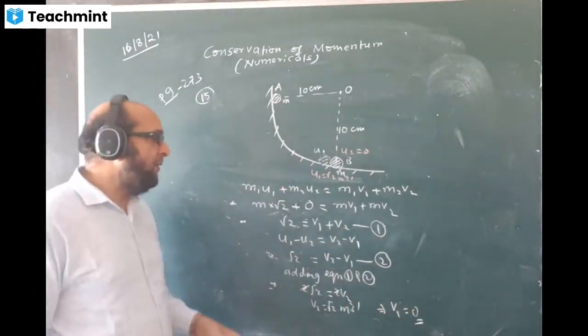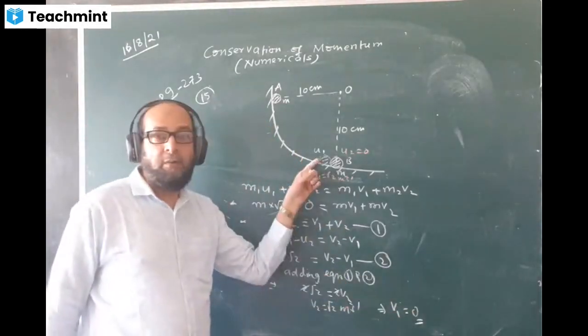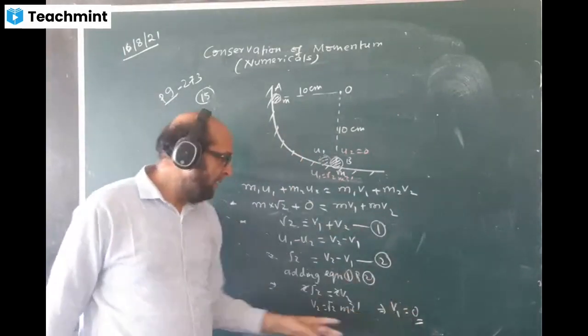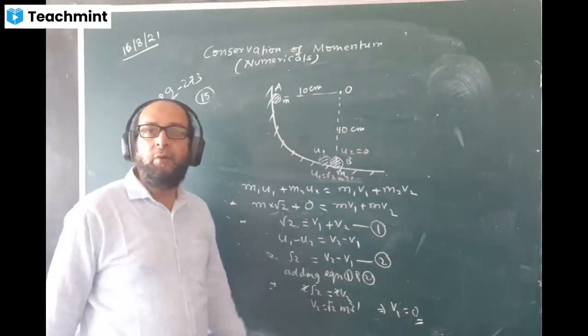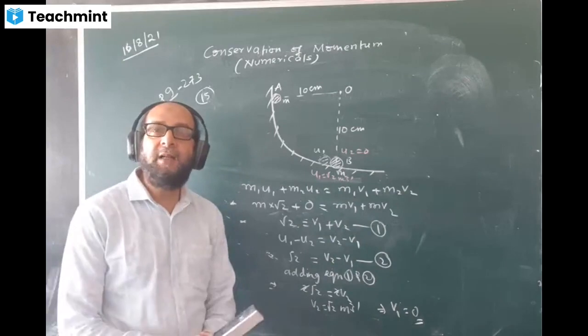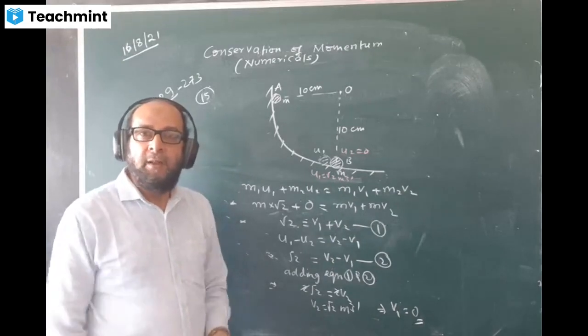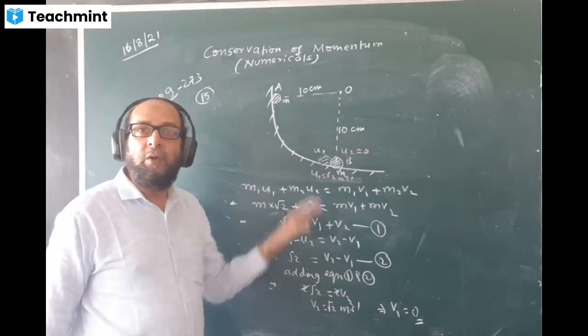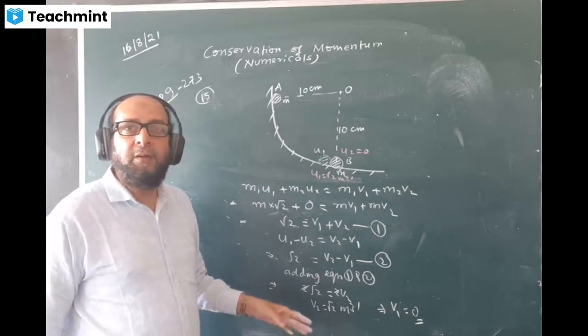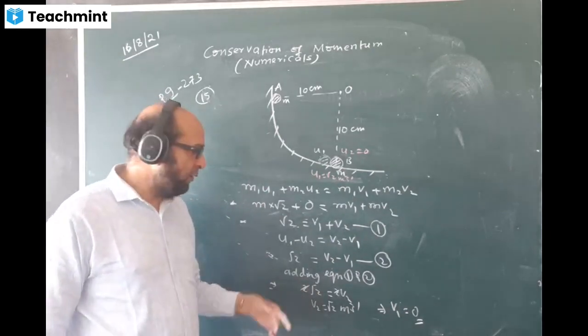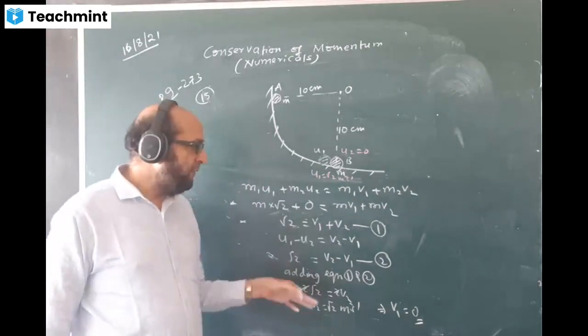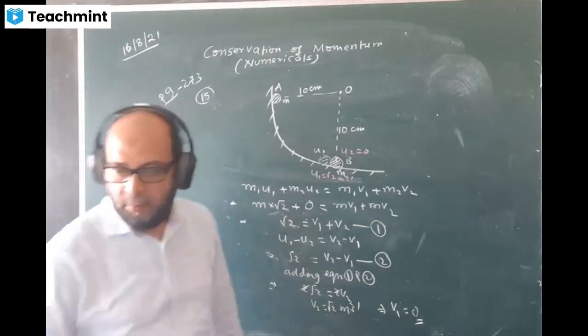v1 value, the velocity of the first ball, will become zero, and velocity of the second ball will become √2. That means velocities interchange. If you don't want to do this long way, you can do it in a shorter way.